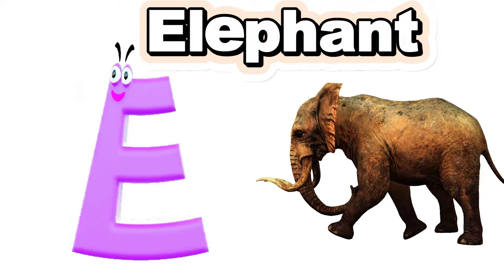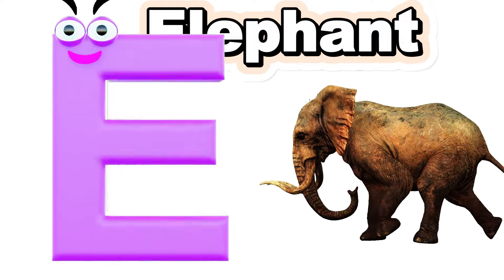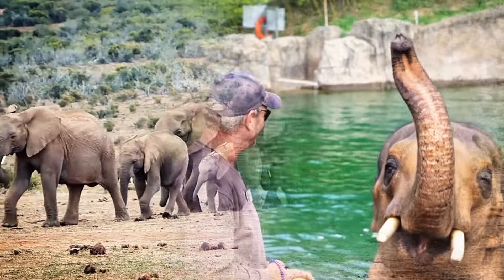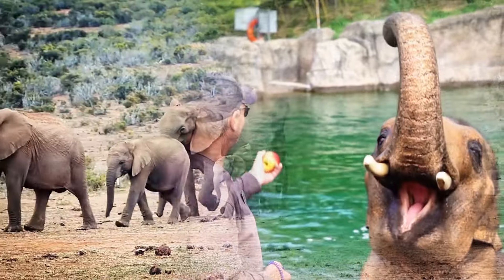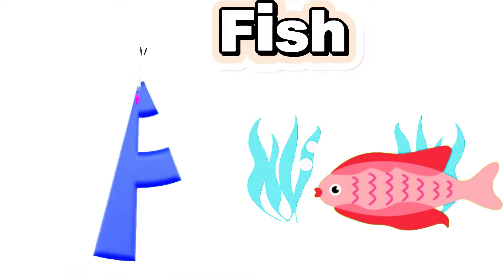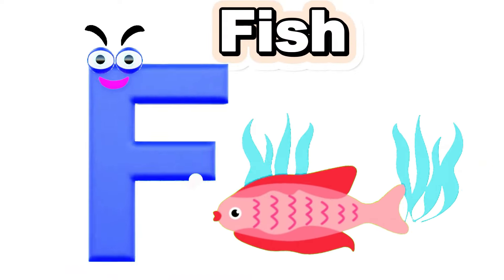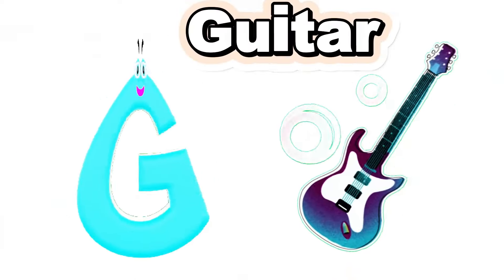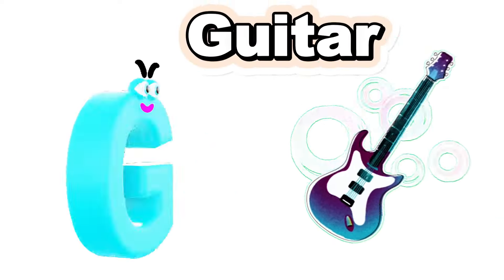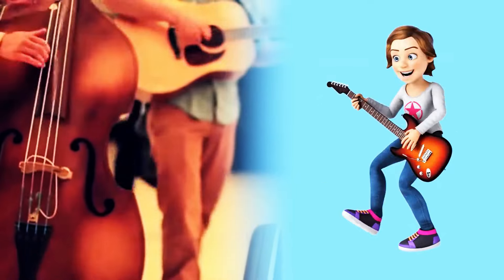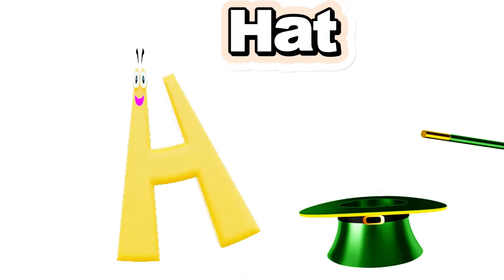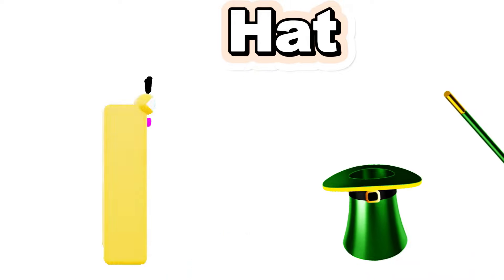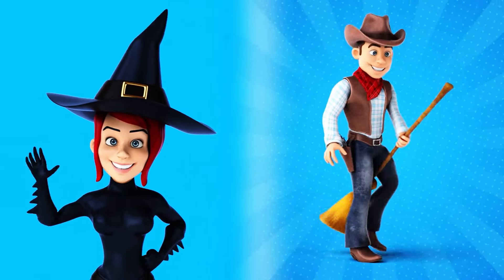E is for Elephant. a-a-a-Elephant. F is for Fish. f-f-f-Fish. G is for Guitar. g-g-g-Guitar. H is for Hat. ha-ha-Hat.